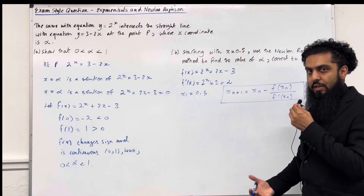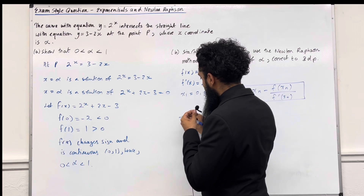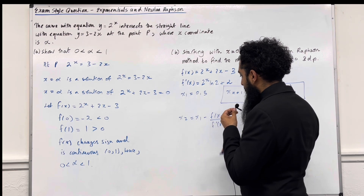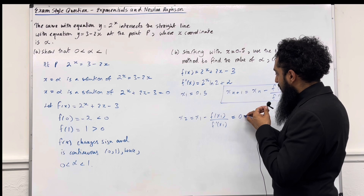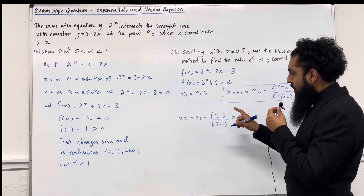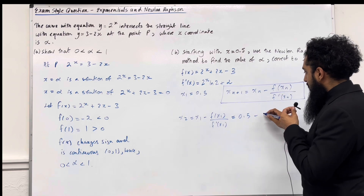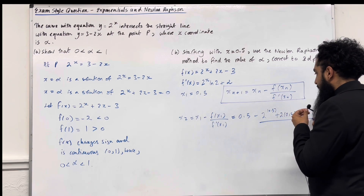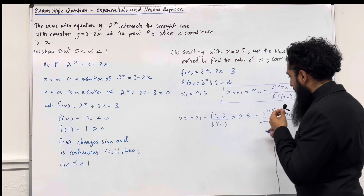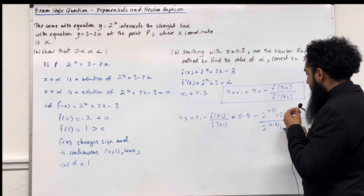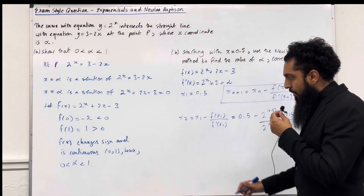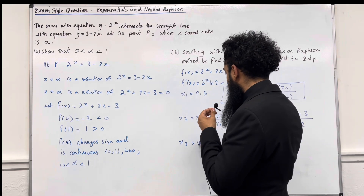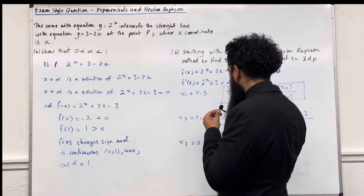Now I'm going to work out the second approximation, x2. To work out x2, I need to do x1 minus F of x1 divided by F dash of x1. So this is equal to 0.5, take away 2 to the power 0.5 plus 2 multiplied by 0.5 minus 3, all over 2 to the power 0.5 times ln 2 plus 2. Putting this into my calculator, I get x2 is equal to 0.696556...